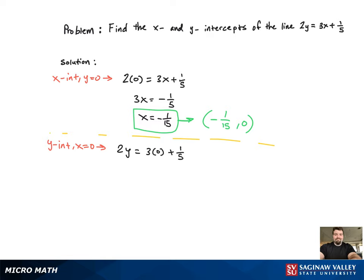We get 2y equal to 1 fifth. Divide by the 2. We get y equal to 1 tenth. And that's going to correspond to the point 0 comma 1 tenth.